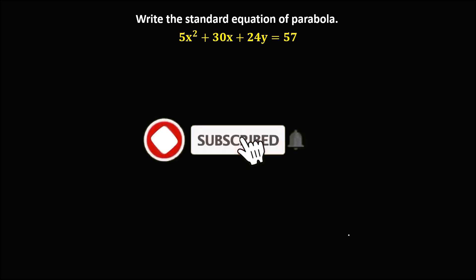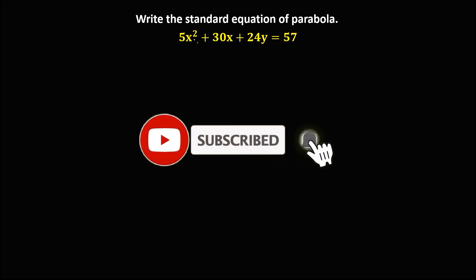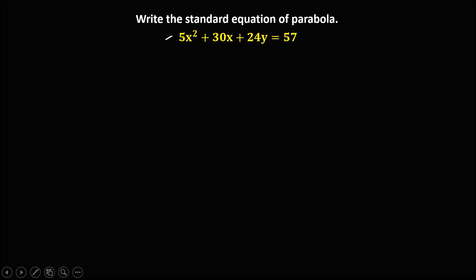So let's have this problem. To write this equation in standard form, first, since the variable with exponent 2 has a numerical coefficient, we need to eliminate this number by dividing every term by this number. So divide every term by 5.